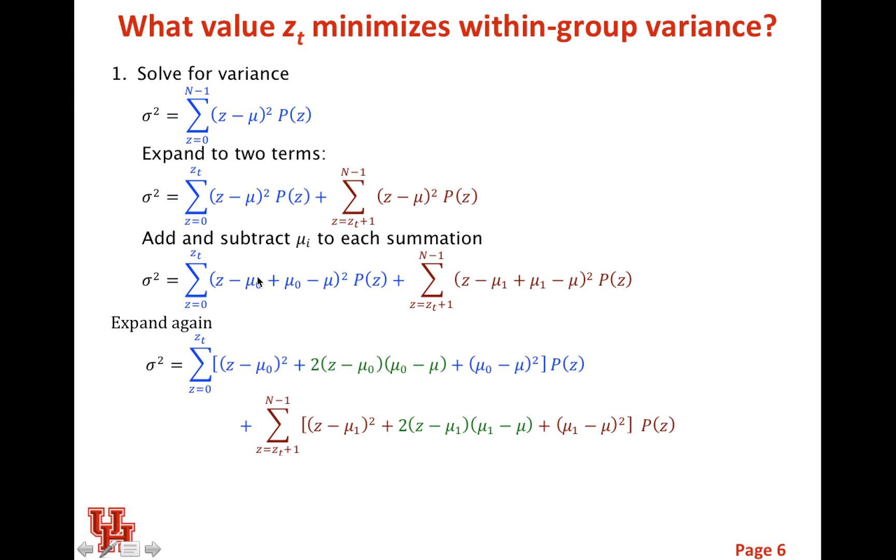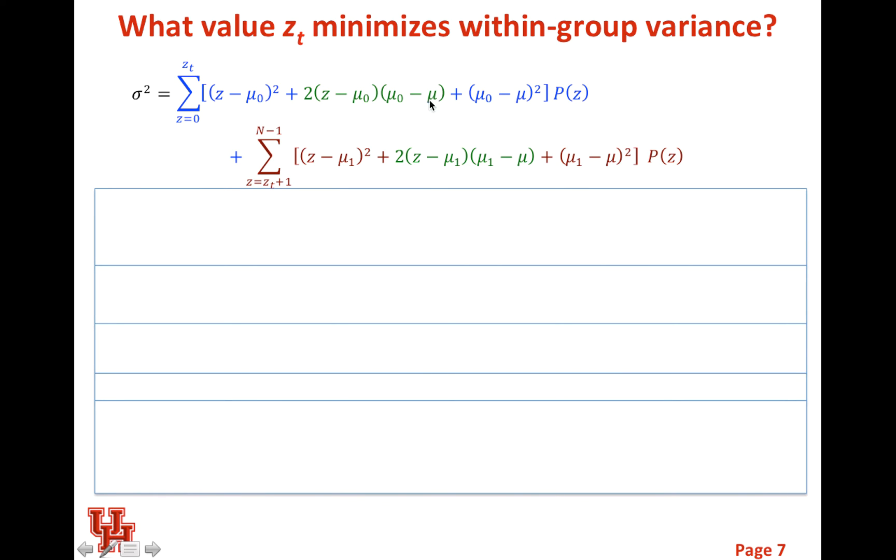We have the first term, this is the variance squared here, and then the difference of the mean times the mean of the foreground. These green terms are called the cross terms. The nice thing is that it turns out that these cross terms are going to equal 0. So we can prove that just by expanding just these cross terms.